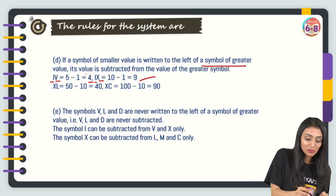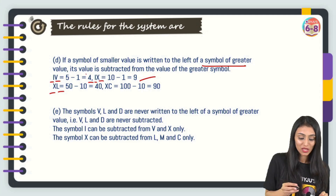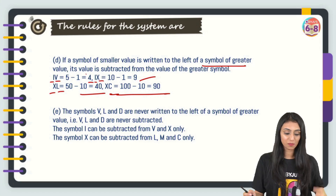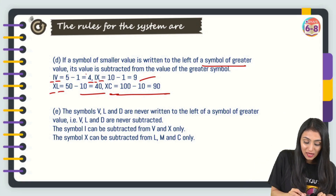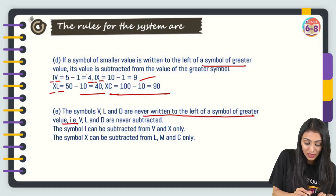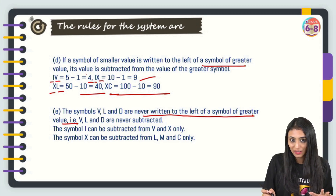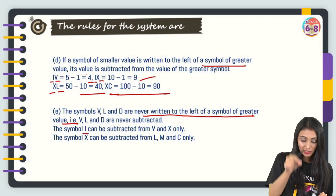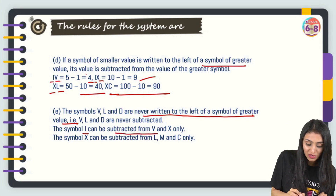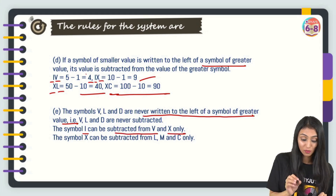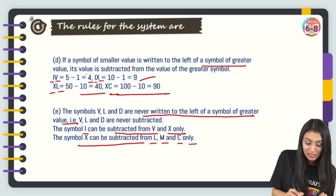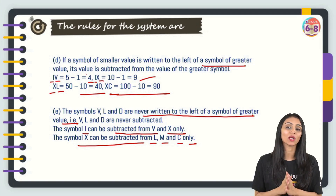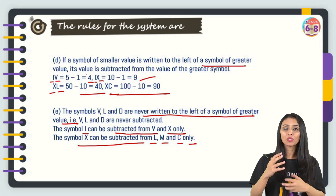Rule 5: V, L, and D are never written to the left of a symbol of greater value — they are never used for subtraction. Rule 6: I can only be subtracted from V and X. Rule 7: X can only be subtracted from L, C, and M. Keep all these rules in mind when working with Roman numerals — practice many questions for a better understanding.